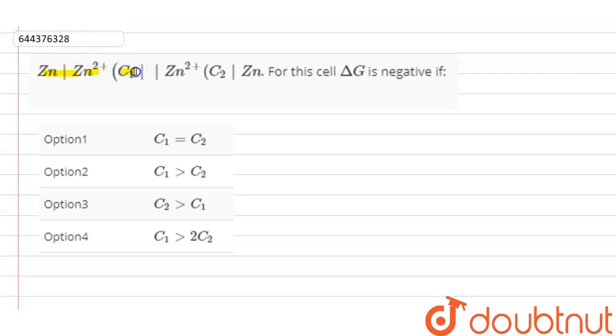The question is: zinc at oxidation concentration C1 and the zinc is also reducing at concentration C2. For this cell, delta G is negative if: Option 1: C1 is equal to C2. Option 2: C1 greater than C2. Option 3: C2 greater than C1. Option 4: C1 greater than twice of C2.